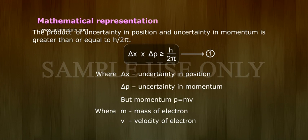Mathematical Representation: The product of uncertainty in position and uncertainty in momentum is greater than or equal to h by 2π. Δx × Δp ≥ h/2π. Equation 1.